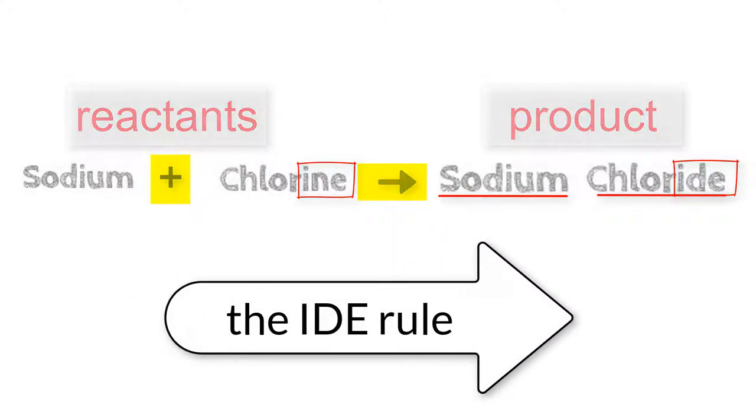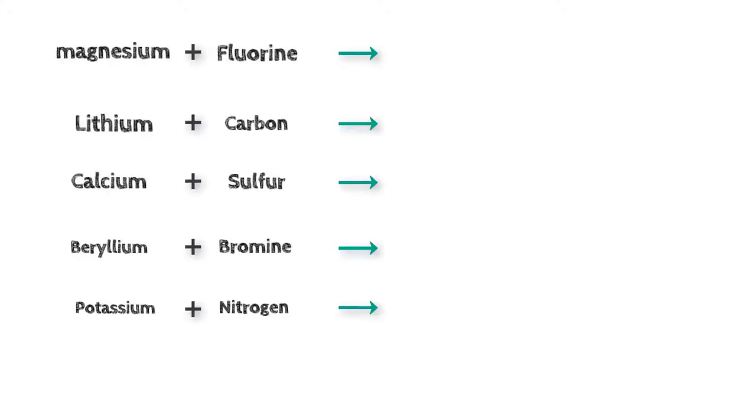Let's try these. We'll write a word equation and then write the name of the product. We have magnesium reacting with fluorine, lithium reacting with carbon, calcium reacting with sulfur, beryllium reacting with bromine, and potassium reacting with nitrogen.